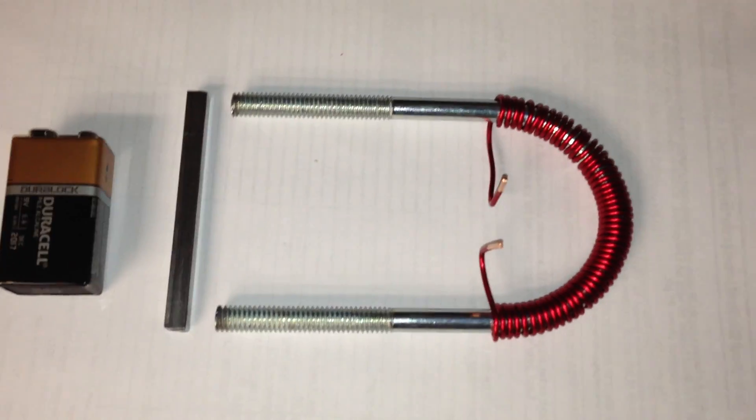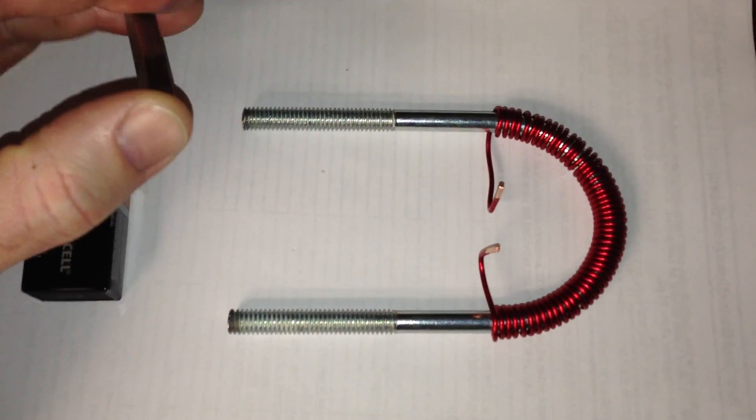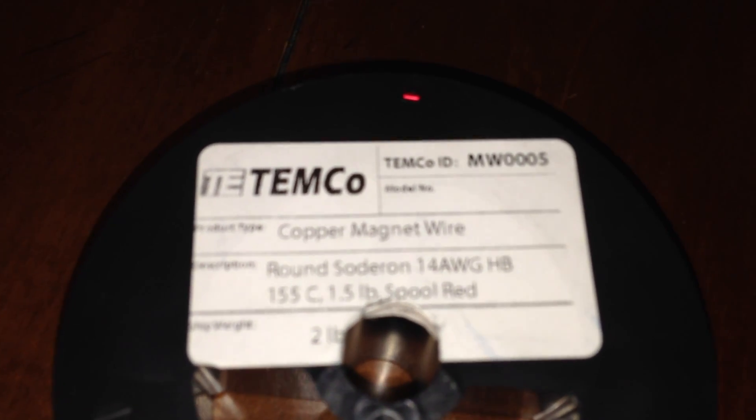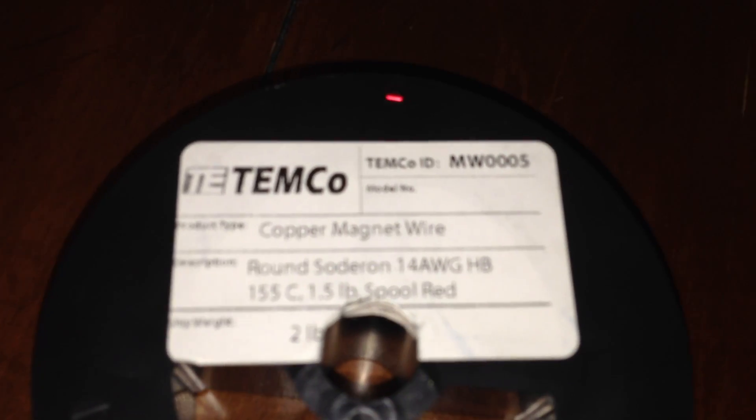So I had a u-bolt laying around. I just had to go buy this square bar stock over at Home Depot, and then I got some of this on eBay. There we go, just some 14 gauge AWG magnet wire, enameled.